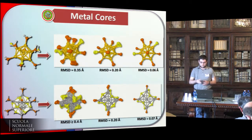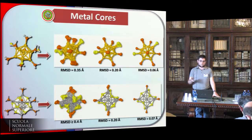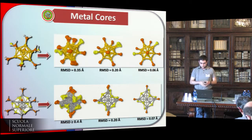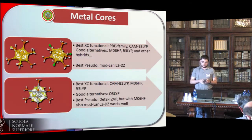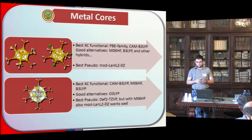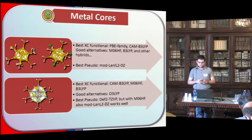These are some geometries we observed during our optimizations. I have superimposed them in order to show you how different computational combinations of functionals and pseudopotentials lead to very different structures. We found that functionals of the PBE family — the GGA functionals of the PBE family — actually reproduce the experimental structure of the two gold clusters quite well.